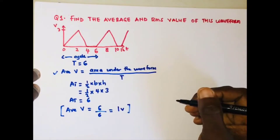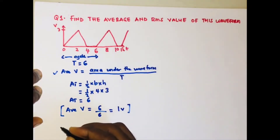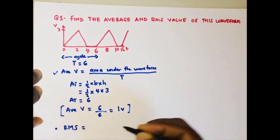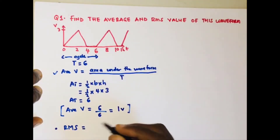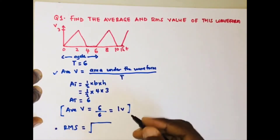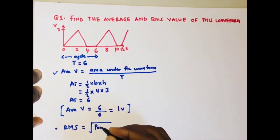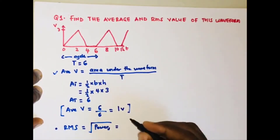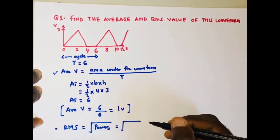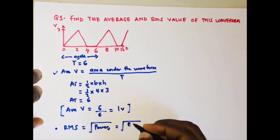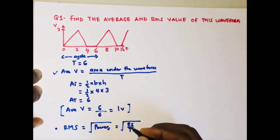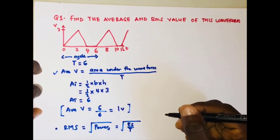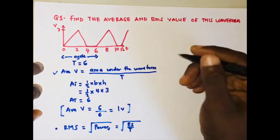Now let's find the RMS value. The RMS value of any waveform is equal to the square root of the signal power, where power is energy over time. So it's the square root of the energy of the signal divided by the period. Let's talk about the energy of some standard waveforms — we'll cover three waveforms.